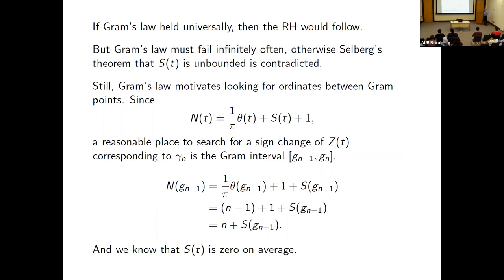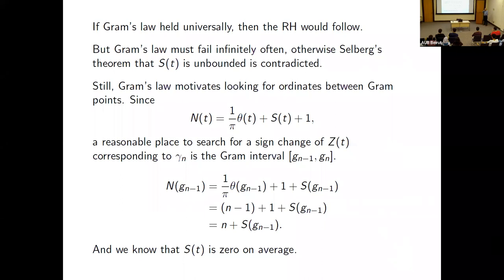Even so, you can use gram points as a starting point to search for roots. At the (n−1)th gram point, by definition θ(gₙ₋₁) = π(n−1), so N(gₙ₋₁) = (n−1) + 1 + S(gₙ₋₁). Since Littlewood showed S(t) is zero on average, the actual value of N at the (n−1)th gram point is probably close to n. So if you start finding roots of Z(t) near this gram point, you'll probably be finding the nth zero of zeta — that was Gram's idea instead of randomly looking for sign changes.